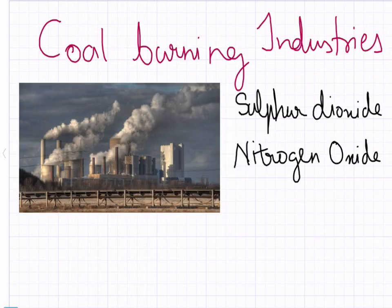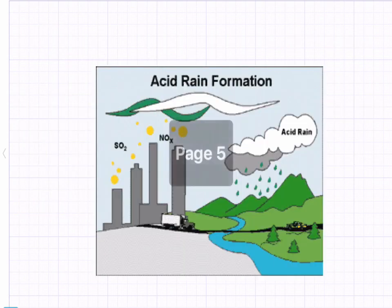But large-scale burning of coal or oil in industries, power plants and vehicles produce large amounts of gases such as sulfur dioxide, nitrogen oxide, etc., which are released into the atmosphere.